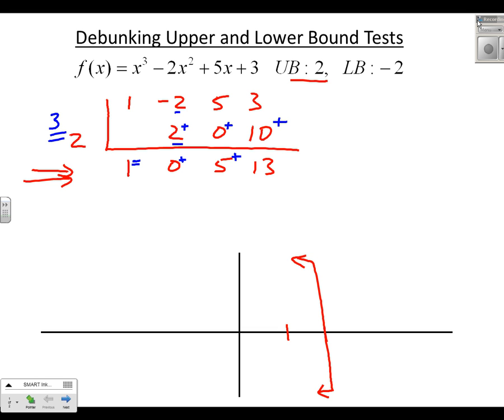If we consider end behavior of this function, we know it's eventually going up. What this tells us is that by the time we get to 2 — where we were at 13 — every value after that is bigger. So we have no more zeros in that direction. The bigger the number I put in, the bigger my bottom row is going to get.